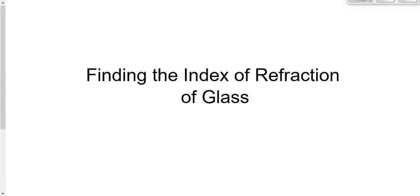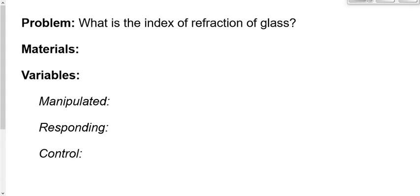The purpose of today's lab is to find the index of refraction of a piece of glass. Phrased as a question: what is the index of refraction of glass? There will be one manipulated variable, one responding variable, and essentially an infinite number of control variables — but list the important ones, everything that must stay the same, otherwise it would mess everything up.